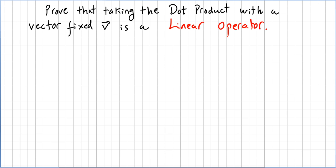This video is on a chapter of vectors in vector spaces and we are working on the concept of dot product. So in this video, this is a very important couple of proofs that we are going to do here because we are asked to prove that taking the dot product with a vector, a fixed vector should be written, fixed vector v is a linear operator.